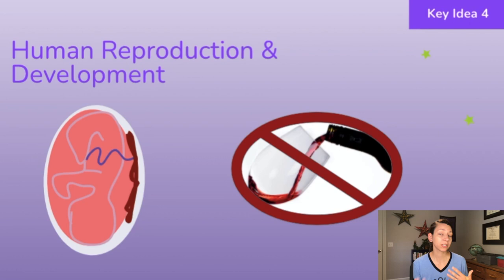Here again we see the impact of environment on genes, because if the mother is exposing herself or the fetus to negative environmental conditions like alcohol or tobacco smoke, that could have a very detrimental effect on the growing embryo. That's why it's important to avoid the use of alcohol, drugs, and tobacco during pregnancy.